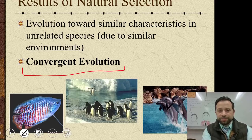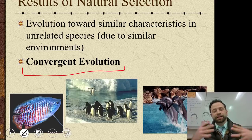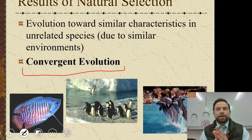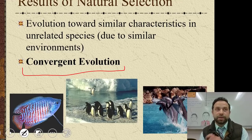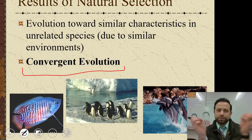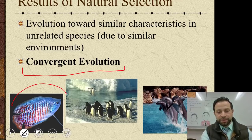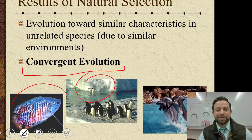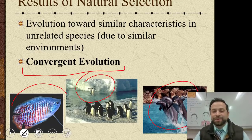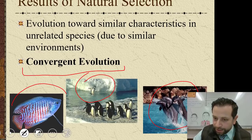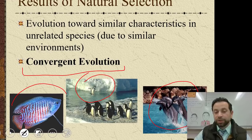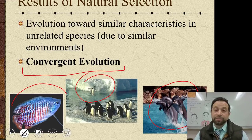Convergent evolution means evolution towards similar characteristics. The misconception is that organisms aren't evolving together to become one — because of their environments, they evolve in a direction where their characteristics start to resemble each other. For example, a fish, a penguin, and dolphins don't all have the same origin, but they all have the ability to swim.